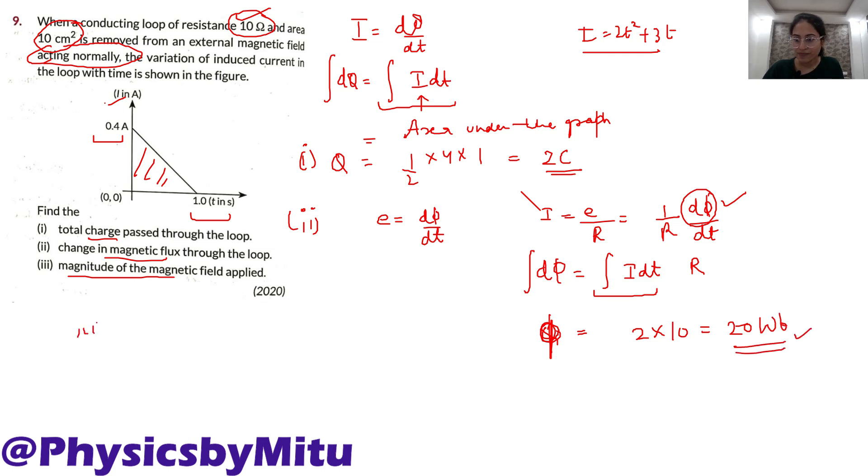Then third part, magnitude of the magnetic field applied. Magnetic field of flux ka relation likhe flux is BA cos theta. Theta is angle between magnetic field and area vector. Aap dekho bola hai, external magnetic field acts normally.